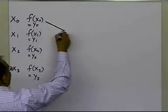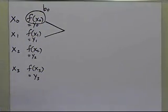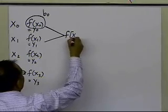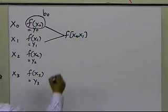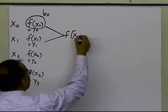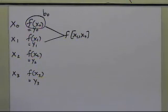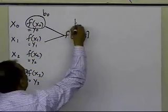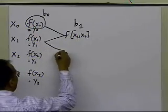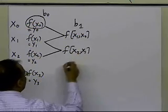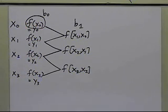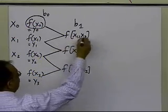Now, the tree structure works as follows: we already know that f(x0) is going to be the value of the function at b0. These two numbers, f(x0) and f(x1), will give you the bracket function of x1, x0 — the first divided difference between x1 and x0 — and that is b1. To find b2, you need another first divided difference, so you also calculate the divided difference between x2 and x1, and between x3 and x2.